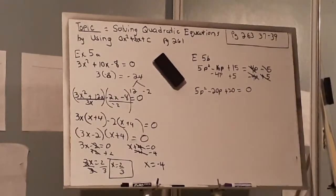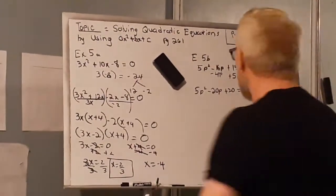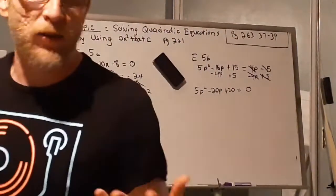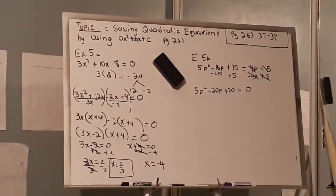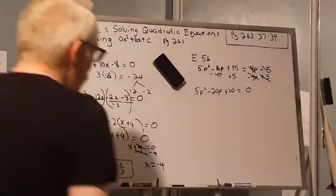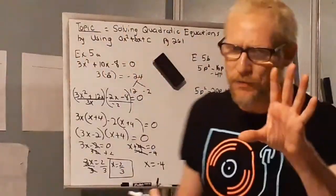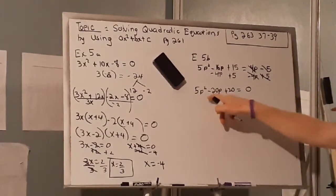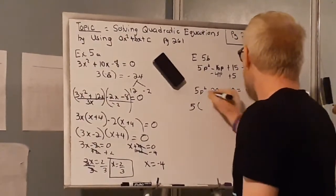Now that this is equal to 0 I can solve the equation, but I still need to factor it out. I need to find a common factor among the terms. For 5p², -20p, and 20, the only possible common factor is 5. I don't use any variables because p is only present in the first two terms, not in 20. So 5 is my common factor, and I'm going to divide everything by 5.